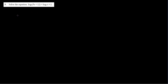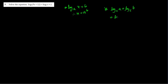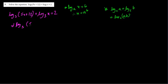Question number 3 is logarithm solving. We use the basic rule: when log base a of x equals b, then x equals a to the power b. Here we don't have a single logarithm — we have two logarithms added together. So we use the rule: log base c of a plus log base c of b equals log base c of (a × b). So: log base 3 of (5x + 12) plus log base 3 of x equals 2 becomes log base 3 of (5x + 12)(x) = 2.